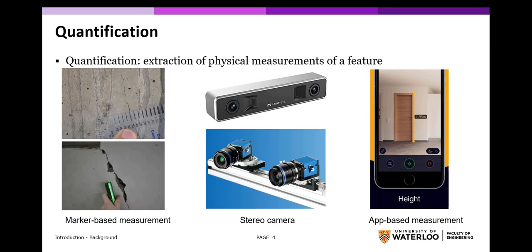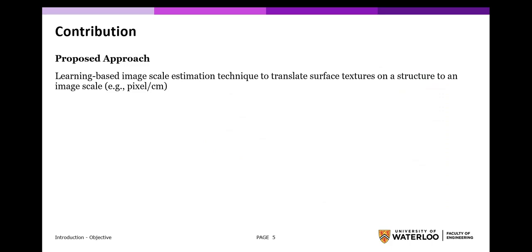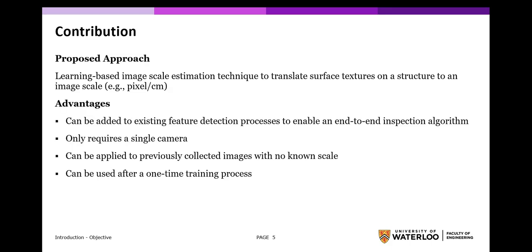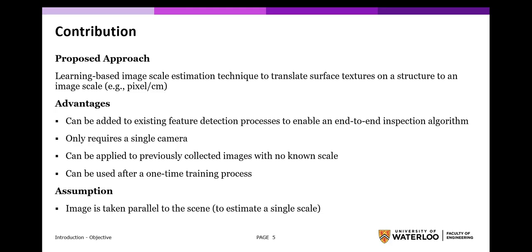The work today seeks to expand on the list of possible quantification methods, which can be applied to existing detection and localization algorithms to enable streamlined, end-to-end inspection processes. The main contribution of this work is the learning-based image scale estimation technique, which utilizes texture patches of the structure to infer an image scale — a pixel per length metric — which can then be used to quantify features in an image. Advantages include that once a scale estimator model is built, it can be added to existing feature detection processes, requires only a single camera with no other specialized equipment, and can be applied to previously collected images that have no known scale. The technique operates under the assumption that images are taken directly parallel to the scene, allowing the image to have a single corresponding scale value.